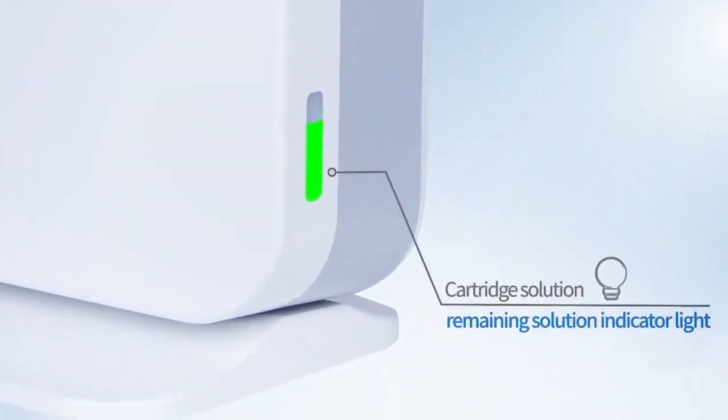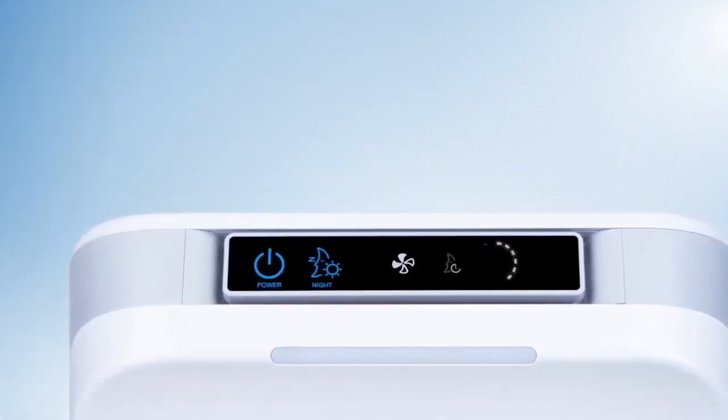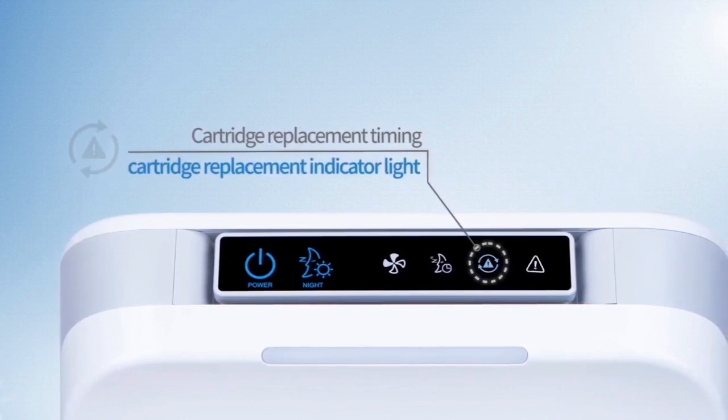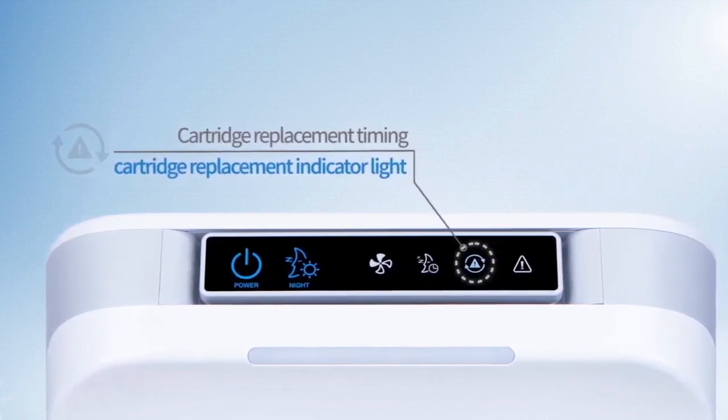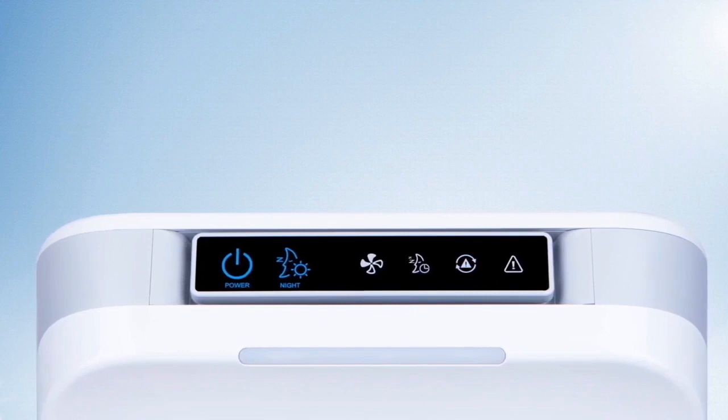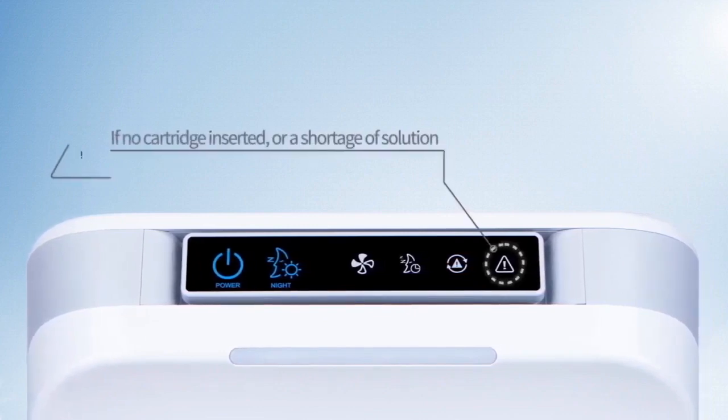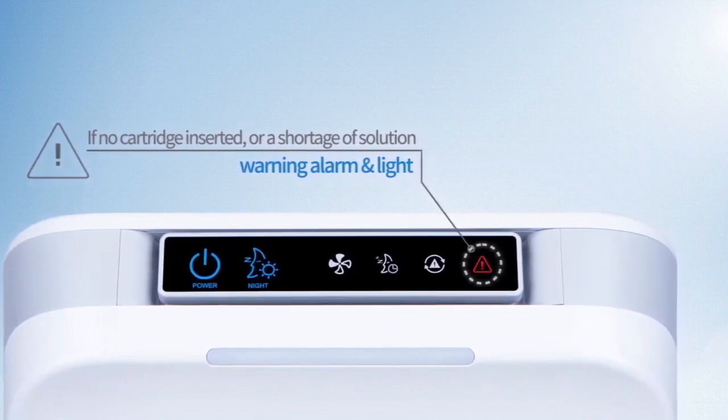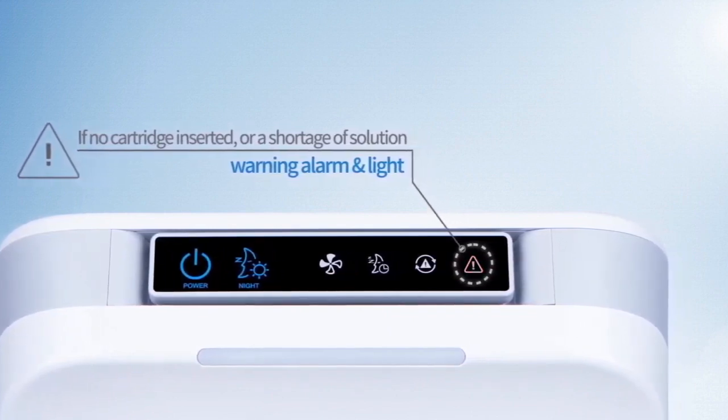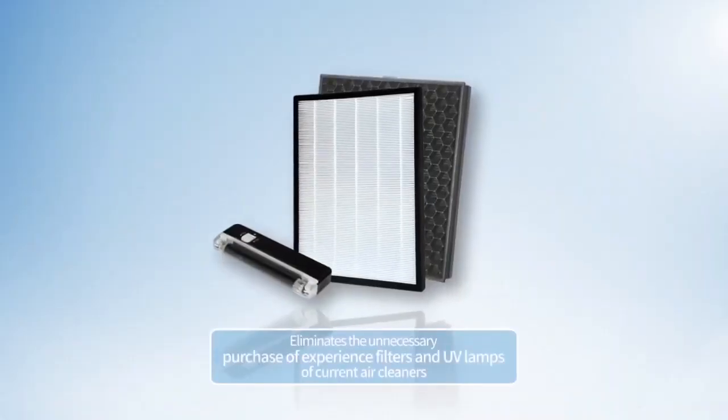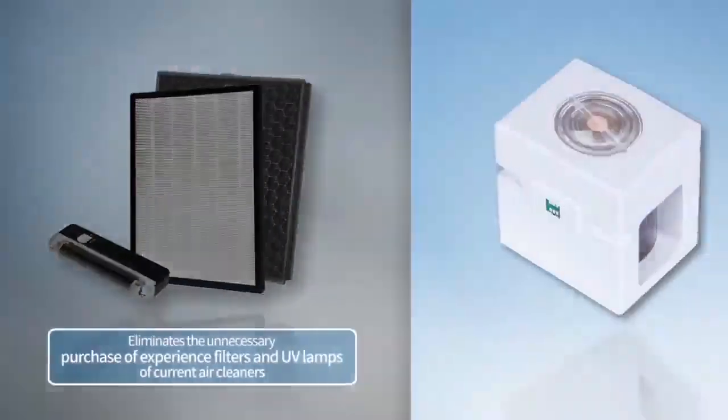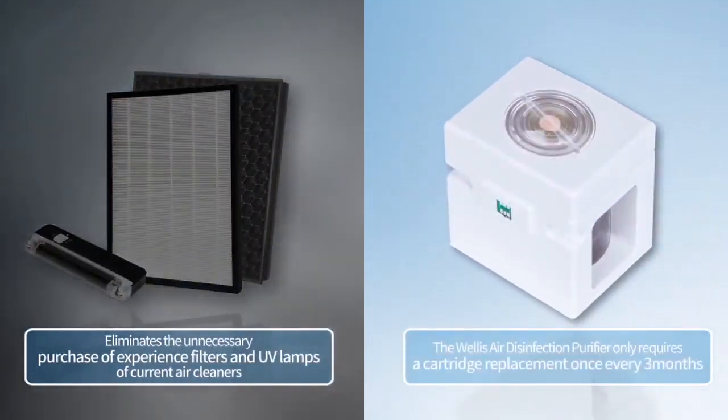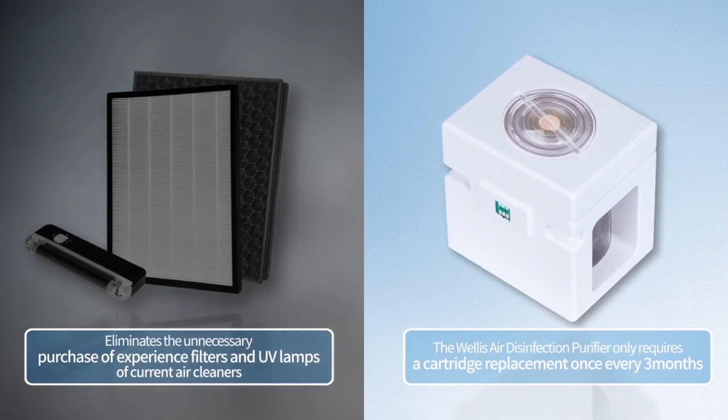The Wellis device cartridge shows the amount of solution remaining. When a solution refill is needed, a notification light turns on, enabling the cartridge to be refilled before it runs out. If the cartridge is not inserted or if the solution runs out, a warning alarm with red light turns on and the unit ceases operation. With this unit, there is no necessity for purchasing an expensive filter or UV lamp. You only have to replace the cartridge once every three months for maximum air purification.